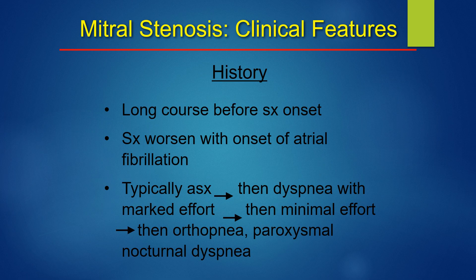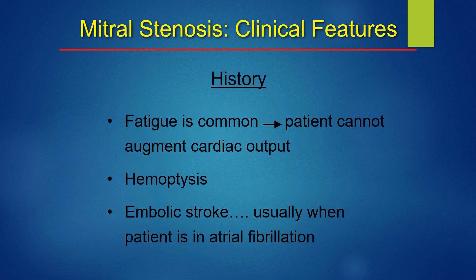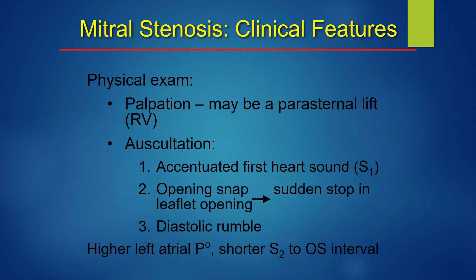There is a long course before symptom onset. Symptoms worsen with the onset of atrial fibrillation. Progression: asymptomatic, then dyspnea with marked effort, then minimal effort, then orthopnea and paroxysmal nocturnal dyspnea. Fatigue is common; the patient cannot augment cardiac output. Hemoptysis and embolic stroke usually occur when the patient is in atrial fibrillation. On physical exam, palpation may reveal a parasternal lift due to RV enlargement.